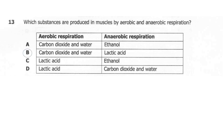The correct answer here is B. In aerobic respiration, glucose reacts with oxygen to produce carbon dioxide, water, and energy. In anaerobic respiration in muscles, glucose is broken down into lactic acid and energy. Ethanol is produced in plants. Since we're talking about muscles — animals — animals produce lactic acid, which can cause fainting or muscle cramps.